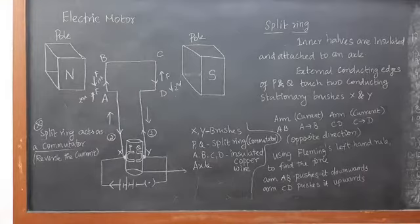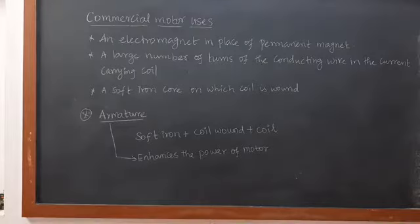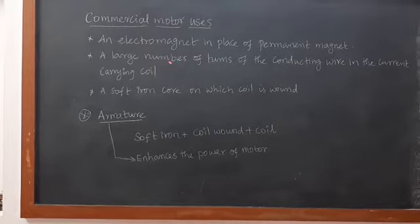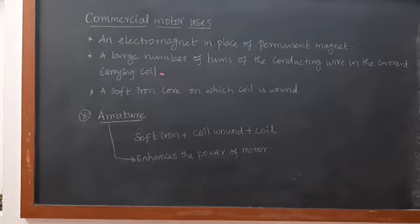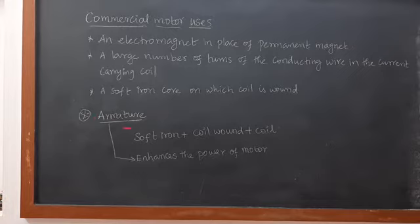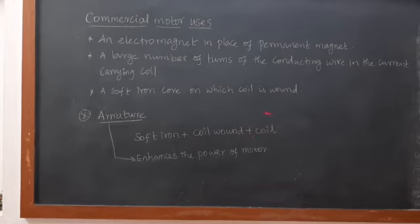These are some uses of commercial motors. First point: an electromagnet is used in place of a permanent magnet. Second point: a large number of turns of conducting wire in the current-carrying coils. Third point: a soft iron core on which the coil is wound. What is an armature? An armature is a soft iron core bounded with coils — that combination is called the armature. The use of the armature is that it enhances the power of the motor.